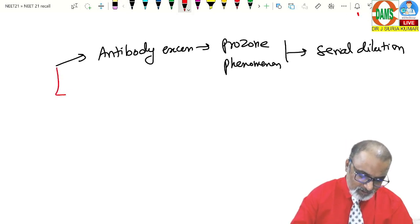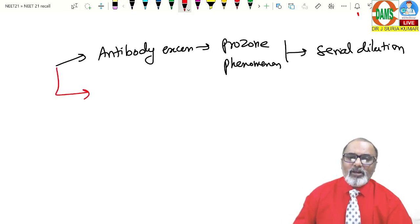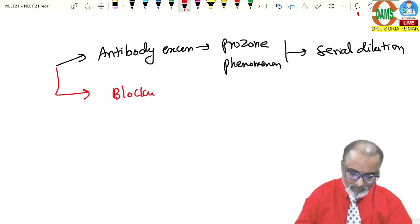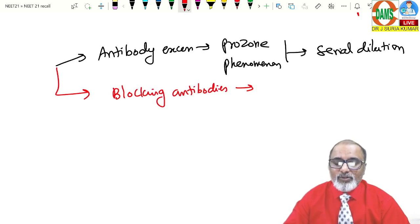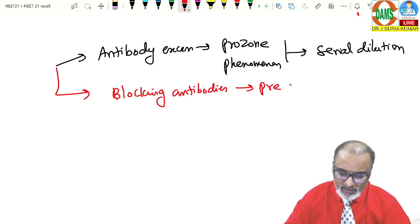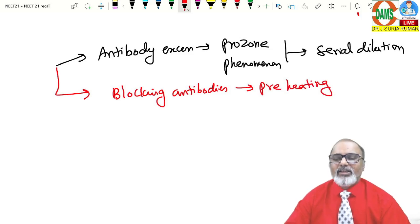Number two is, some of the blocking antibodies will be there. How to overcome, you can preheating of the serum. Before test, you can heat the serum. Preheating of the serum.